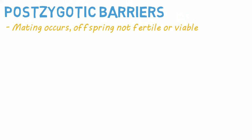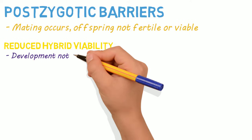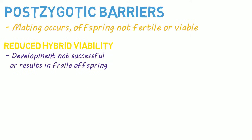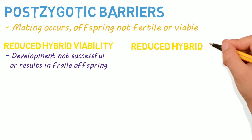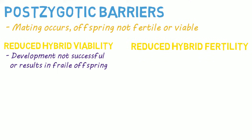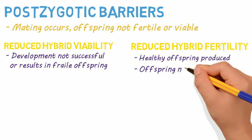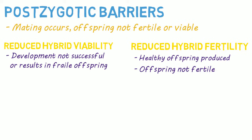Now to post-zygotic barriers. These barriers occur after fertilization has occurred, so mating happens but no viable or fertile offspring is produced. These include reduced hybrid viability, in which case there is successful fertilization but development is not successful or results in very weak offspring prone to early death. Another example is reduced hybrid fertility, in which case mating successfully produces offspring — a hybrid of the parents — but the offspring is not fertile and thus produces no offspring of its own.